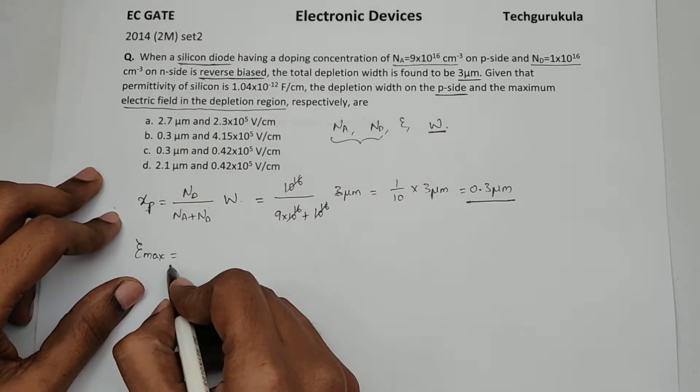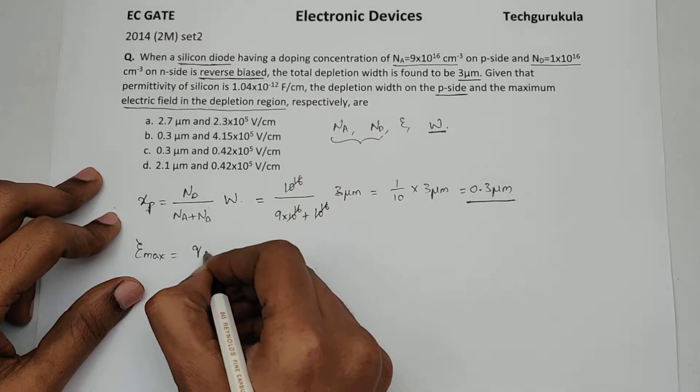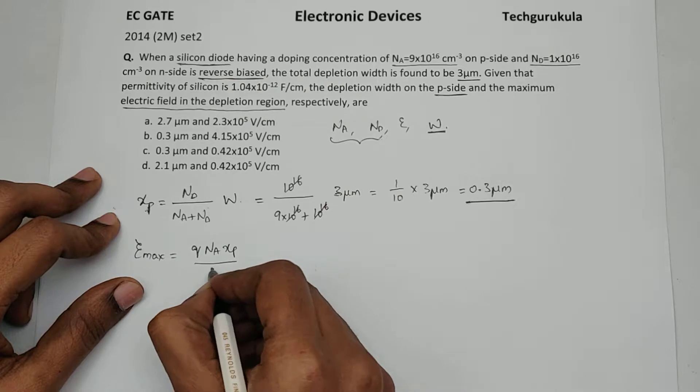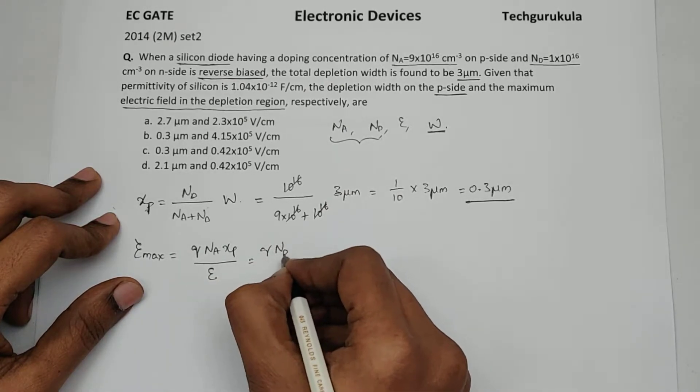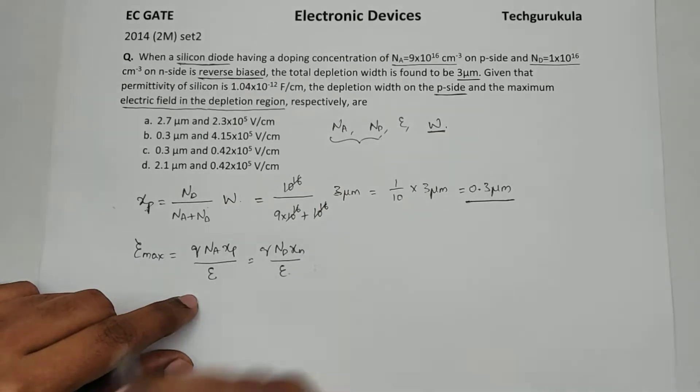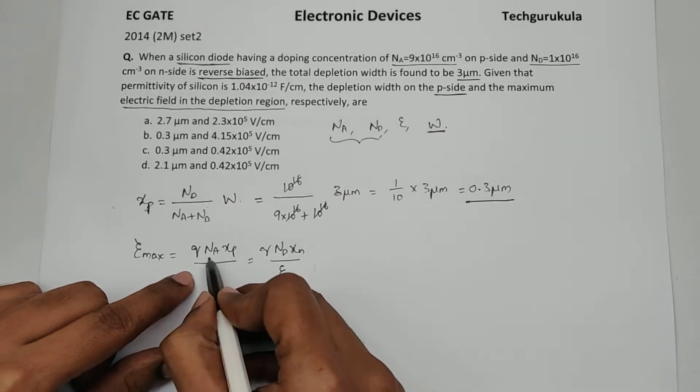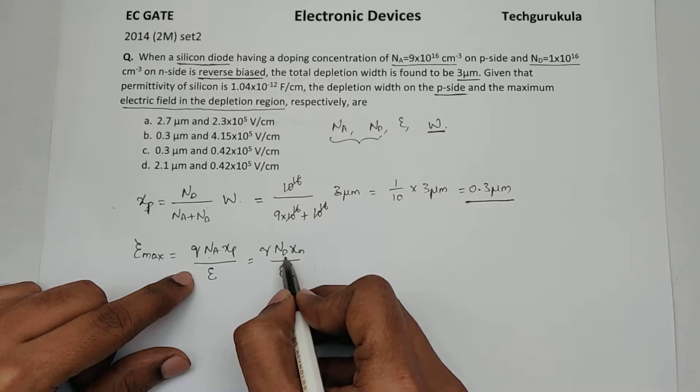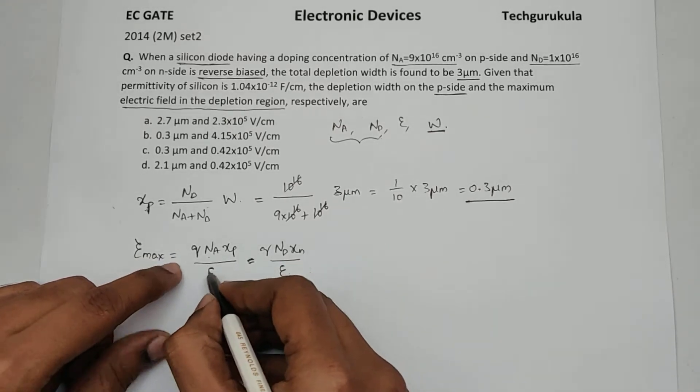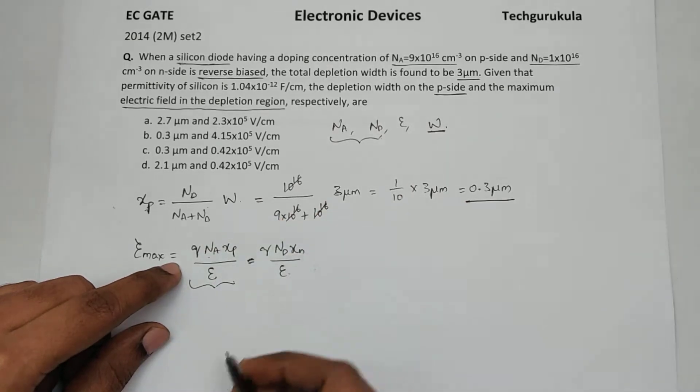E max, the electric field max is given by Q times Na times Xp over epsilon. This is also equal to Q times Nd times Xn over epsilon. Of course, because Na Xp is also equal to Nd Xn, hence these two formulas are same. Now I am going to take this expression because Xp is anyway calculated.